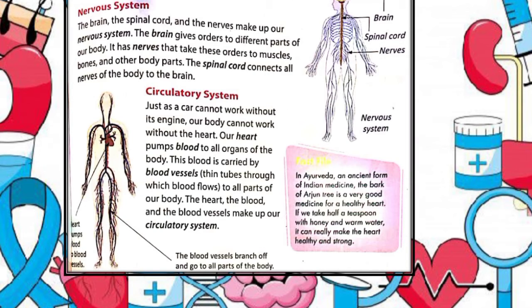The nervous system includes the brain and spinal cord, which make up the central nervous system, and nerves that run throughout the rest of the body. The nervous system controls both voluntary and involuntary responses of the human organism and also detects and processes sensory information.